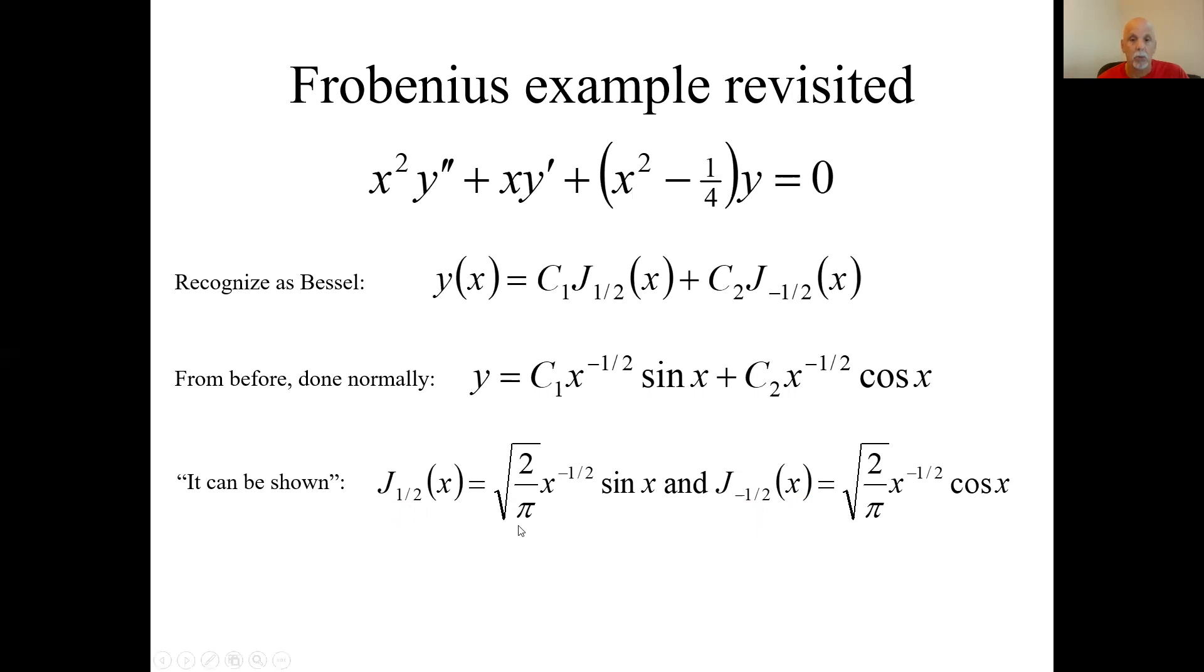If you go back and figure out what J sub a half is and J sub minus a half is, you would get these. I'm not going to go through all that, but when you put them in a linear combination, you can just absorb these square roots of two over pi into these arbitrary coefficients, so that these two solutions are actually the same. But now, when you recognize it as a Bessel equation, you can just write it this way, without going through all the pain of manipulating sums.